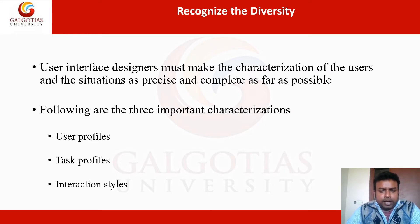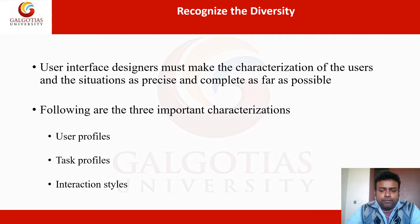There are three important characteristics: one is user profiles — that is the diversification of users, different profiles of users having the same kind of activity or needs. Then there is task profile and interaction style. Similarly, tasks can be of different types, and interaction can also be of different types. We have already discussed five different classical interaction styles, and every interaction style has some merits and demerits.